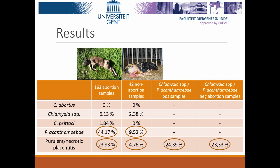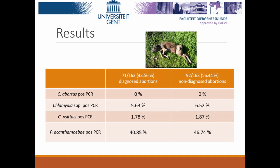Focusing on the abortion group samples, there were no positive samples for Chlamydia abortus. We found some pan-chlamydia positive samples, but no difference between the non-diagnosed and diagnosed groups. We found some samples positive for Chlamydia psittaci, but again no difference between the two groups. We also found no difference in the prevalence of Parachlamydia acanthamoebae between the non-diagnosed and diagnosed groups — 40% against 46%. Without formal statistics, there is no substantial difference in those prevalence percentages.